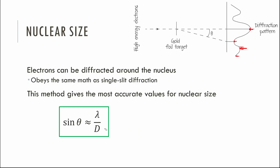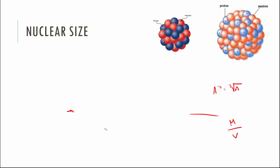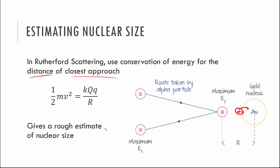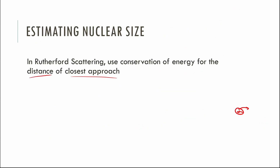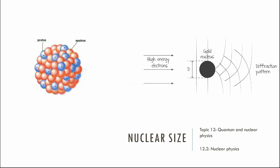So there are your three methods for measuring the size of a nucleus: shoot alpha particles at it for a rough estimate, shoot alpha particles at it very fast to probe the strong force, and diffract electrons around it for the best result. Know those methods, know the equations, know how to use them. The actual problems aren't too bad — go try some and see if you can apply these ideas.